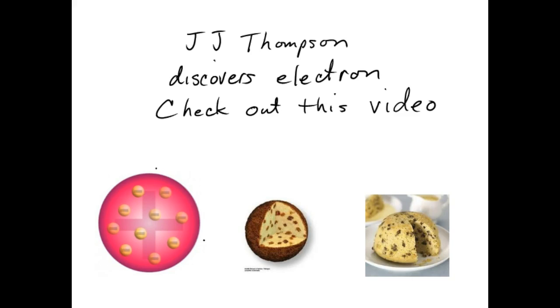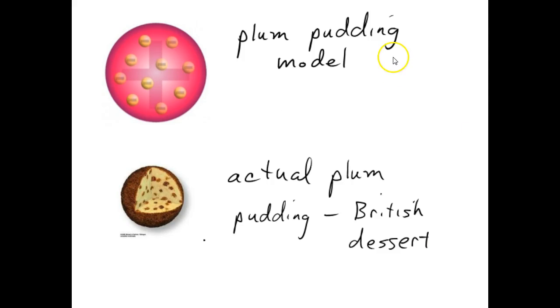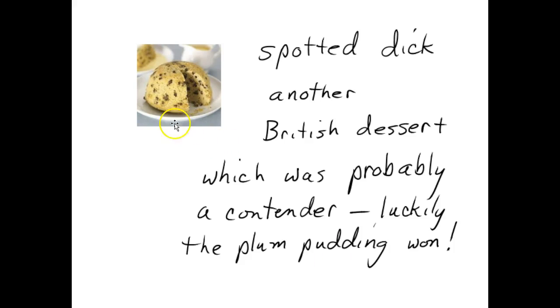This led to the plum pudding model. This is the plum pudding model. It has a positive background material for the atom, and negative electrons embedded in it. This is an actual plum pudding. It's got a bread pudding background to it, and plums embedded in it. You can see the resemblance. This spotted dick is another British dessert, which was probably a contender for the model name. Luckily, they didn't pick it. It would have been so embarrassing.